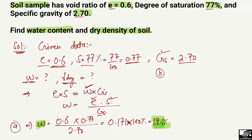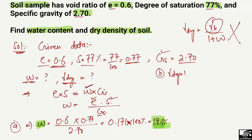Next, we find the dry density of the soil sample. There are different formulas available. One formula is dry density = gamma_bulk / (1 + W), but we don't know the bulk density, so we cannot use it. Instead, we use: dry density = (Gs × gamma_W) / (1 + E).